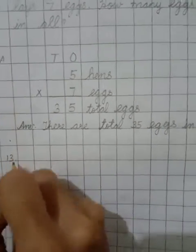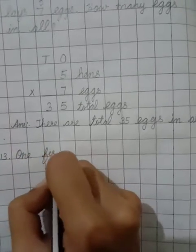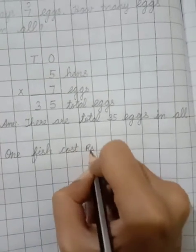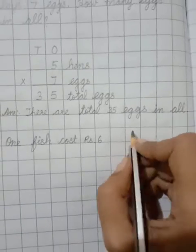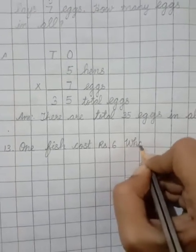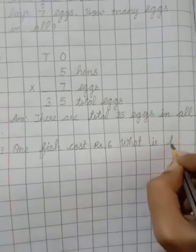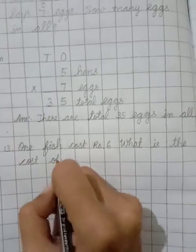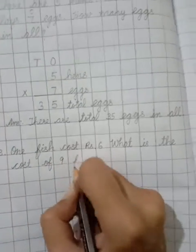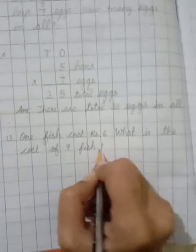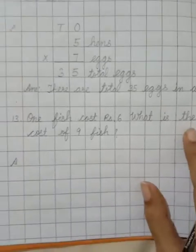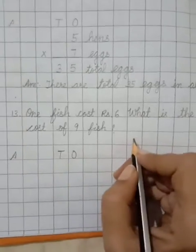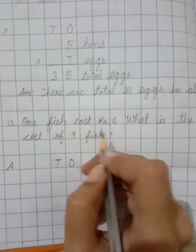Number thirteen. One fish costs rupees six. What is the cost of nine fish? Answer — tens and ones. So one fish costs rupees six.